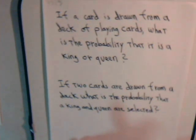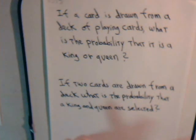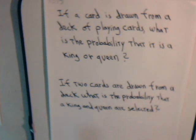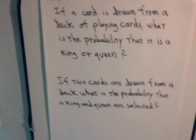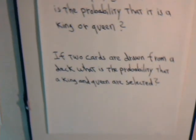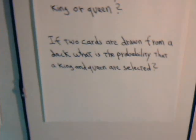In this video, it should be pretty straightforward. It's a compound event — at least the second part of the problem is. The problem reads: suppose we have a deck of cards and we select a single card. What is the probability that the card is either a king or a queen? The second part is: from a standard deck, suppose we draw two cards. What is the probability of drawing a king and a queen?